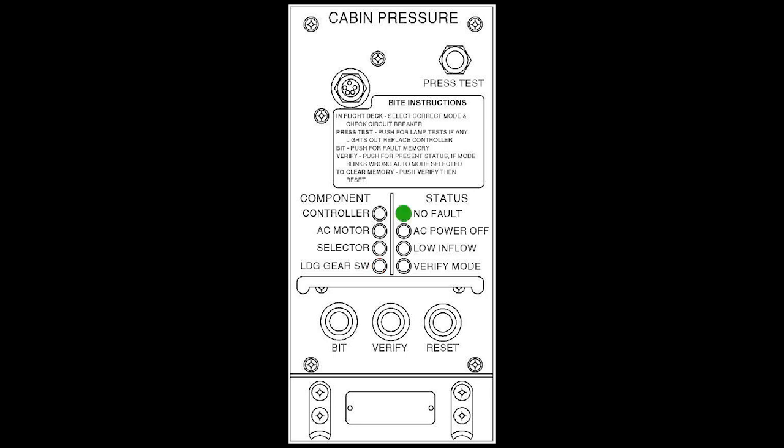The other fault lights on the CPC indicate a status condition, not a fault, and do not require any maintenance action. No fault: if the CPC had no faults during the last flight, a no fault indication will be displayed. AC power off: if the AC power off light is on, the CPC detected the power was temporarily interrupted while it was controlling cabin pressure. Low inflow: this light indicates the CPC detected the airflow into the aircraft cabin was not sufficient to properly control the cabin pressure with the outflow valve.